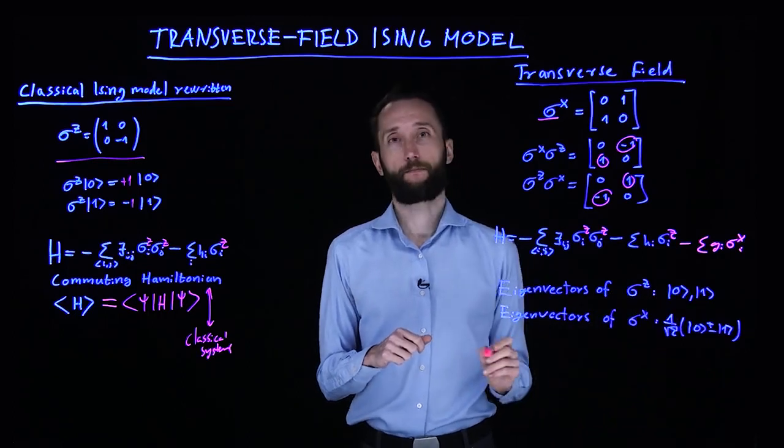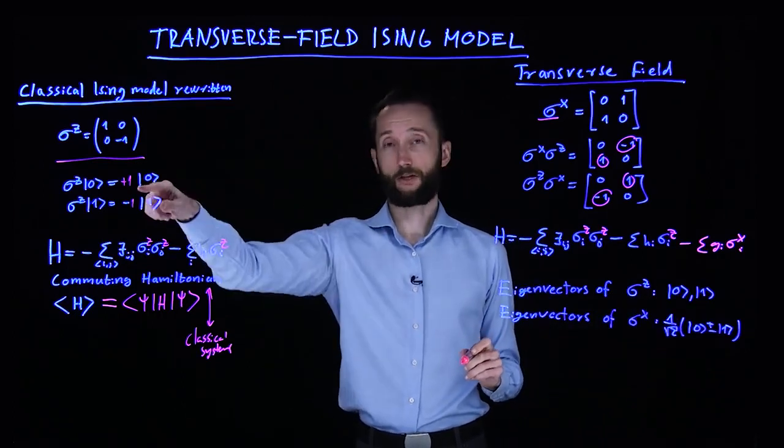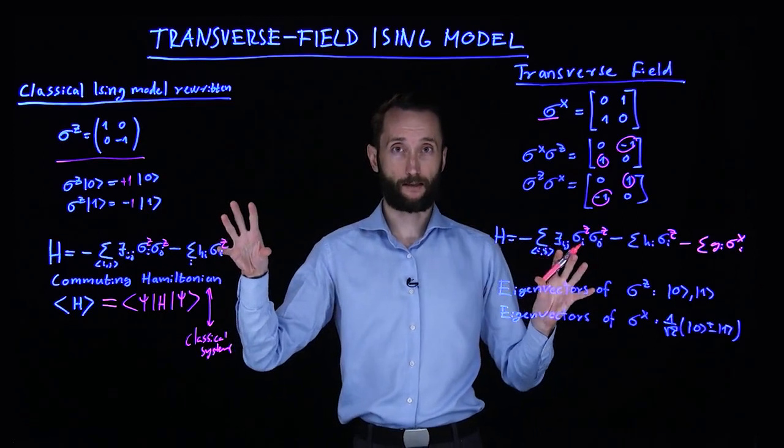For the sigma z, it's just zero and one, so it's plus one or minus one, exact same thing as the classical Ising model.